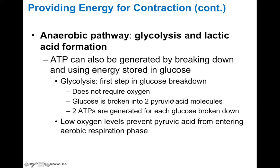Pyruvate molecules are normally sent to the mitochondria, where they feed into the Krebs or citric acid cycle. However, glycolysis itself, which occurs in the cytoplasm or sarcoplasm of muscle cells, yields a net two ATP. So when oxygen levels are low, we can get a little bit of ATP from glycolysis alone.